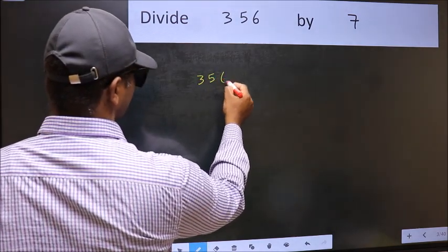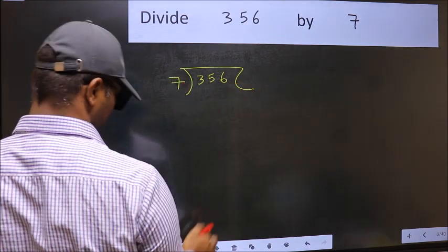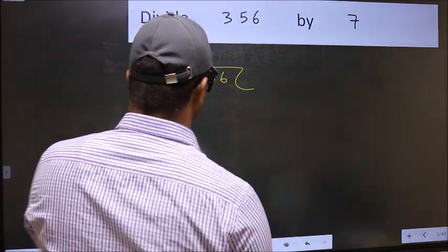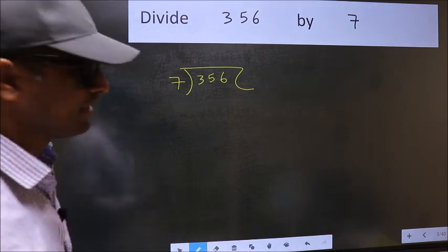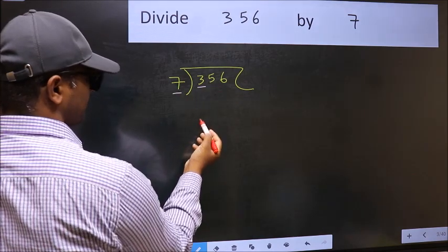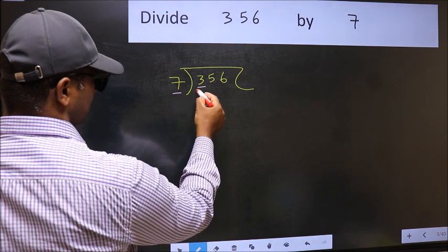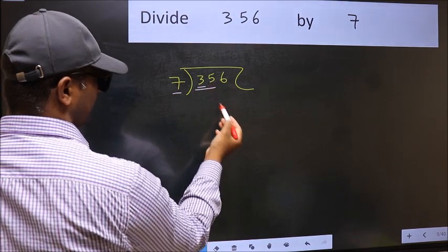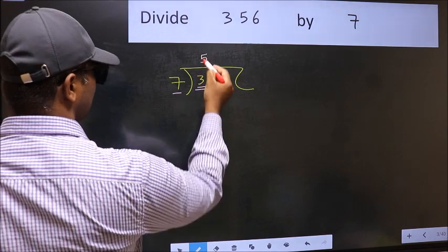356 and 7 here. This is your step 1. Next, here we have 3 and here 7. 3 is smaller than 7, so we should take two numbers, 35. When do we get 35 in 7 table? 7 fives 35.